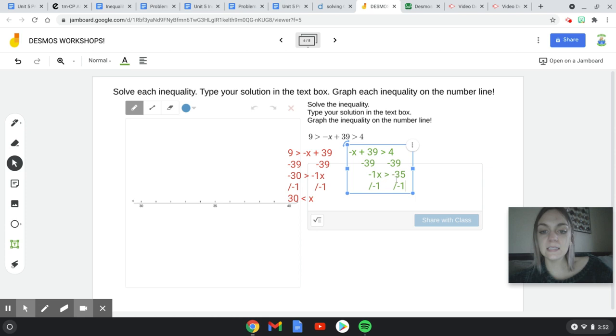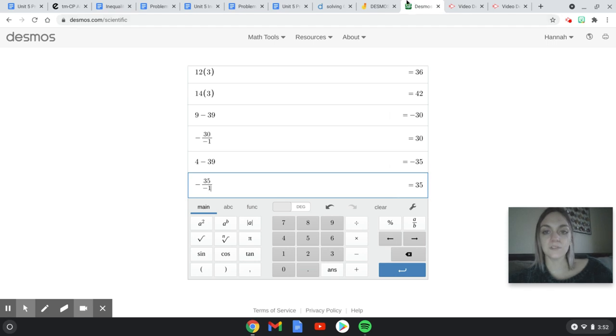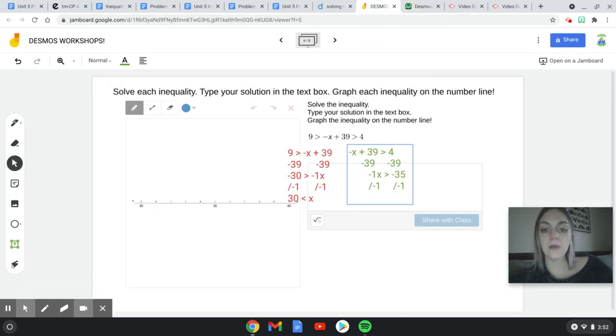Plug this into Desmos, negative 35 divided by negative 1. And then I get my answer as positive 35. But when I divide by that negative 1, since it's a negative number, my inequality sign flips. And I'm left with x is less than 35.